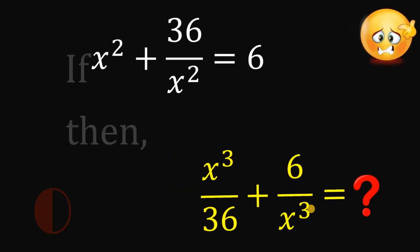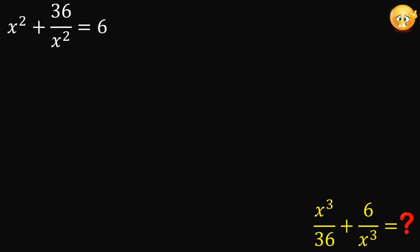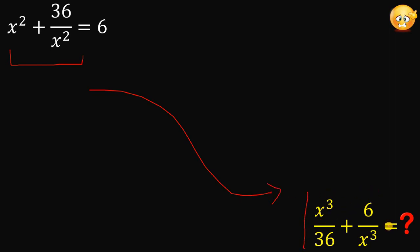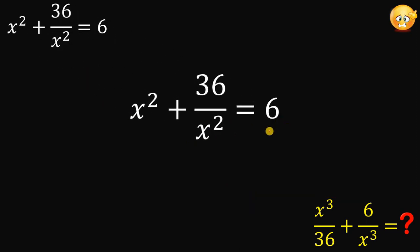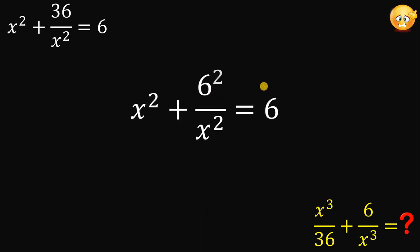Let's answer this question together. Given the equation x squared plus 36 over x squared equals 6, our final goal is to evaluate the expression x cubed over 36 plus 6 over x cubed. To answer this question, let's use the given equation. Take note that 36 is just 6 raised to the power of 2, so let's replace 36 with 6 squared.